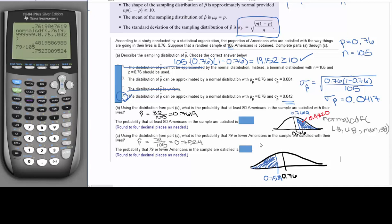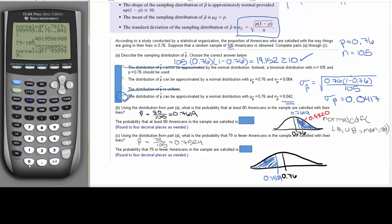So we're going to do a similar idea using normal CDF. So I'm going to go second, vars, down to number 2. For lower bound, well, there's not really a lower bound, because this technically keeps going forever. So I'm just going to do a really big negative number. The negative is underneath your 3 and in parentheses. So negative, and just several nines with a comma. Our upper bound is going to be that 0.7524. The mean is still 0.76, and our standard deviation is still 0.042.